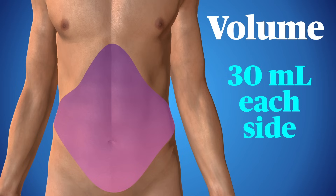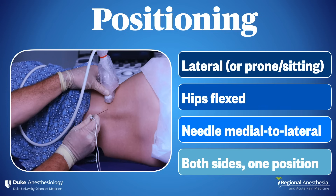Because the QL usually covers the T12 and L1 branches, people have also used QL blocks for hip surgery. This block can easily be done in the sitting and prone positions, although we most commonly perform the block in the lateral position for ergonomics and patient comfort. A curvilinear transducer is placed on the posterolateral abdomen at the level of the iliac crests. The probe is rotated so the beam is directed back towards the patient's spine, and the needle is advanced from the posterior or medial side of the probe, often near the spinal midline. Both sides can be blocked with one position this way, with no need to flip the patient over.